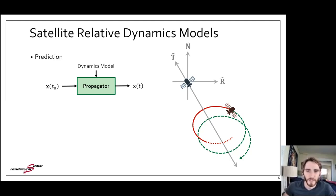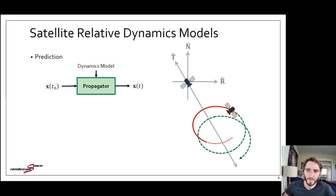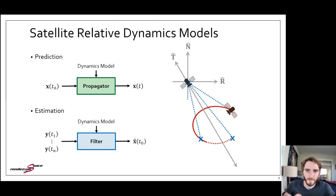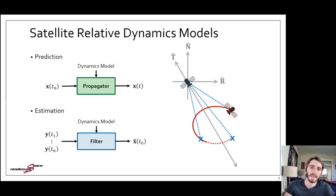I've illustrated that motion in the frame attached to the chief spacecraft shown in blue. These models fulfill two essential roles. The first is prediction: given the relative state at some reference time T0, a dynamics model allows us to propagate the state forward to a future time, which is particularly useful for maneuver planning. The second function is estimation: given a set of measurements of another spacecraft, the dynamics model is used in a navigation filter to estimate the relative state, making sense of limited information.